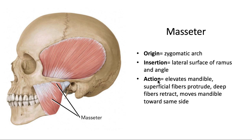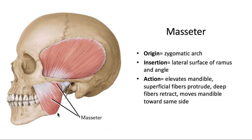The masseter is broken into two distinct parts: a superficial part we can clearly see, and a deep part peeking out behind it. The superficial part has oblique, diagonally running fibers that originate at the anterior two-thirds of the zygomatic arch and insert into the lateral surface of the ramus down to the angle. The deep part has vertical running fibers, also originating from the zygomatic arch but more posteriorly, and it also inserts into the lateral surface of the ramus and the angle.